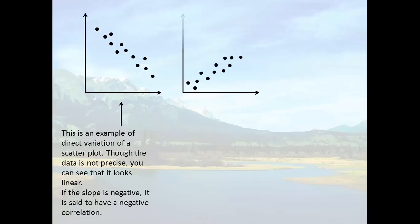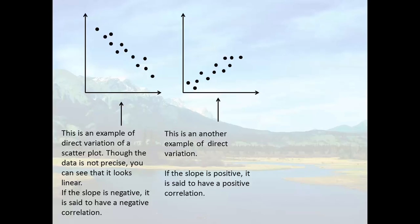You could also have a graph that looks like this. That is also a direct relationship. And if the slope is positive, it is said to have a positive correlation.